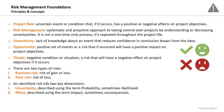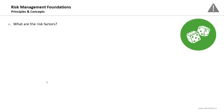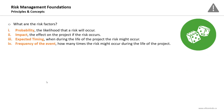What are the four risk factors? First, probability — the likelihood that a risk will occur. Second, impact — the effect on the project if the risk occurs. Third, expected timing — when during the life of the project the risk might occur, whether at the beginning or end. Fourth, frequency of the event — how many times the risk might occur during the life of the project. These are the four risk factors: probability, impact, expected timing, and frequency.